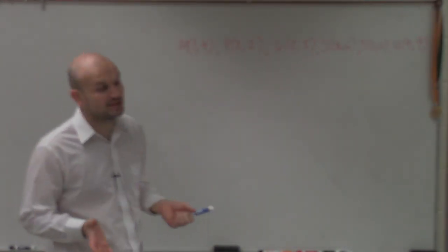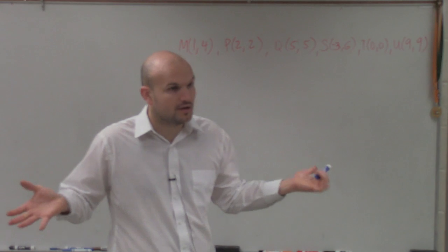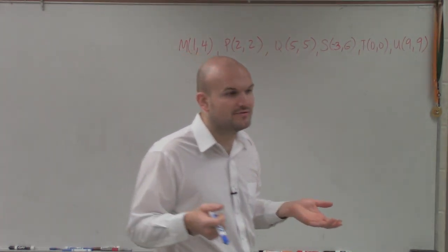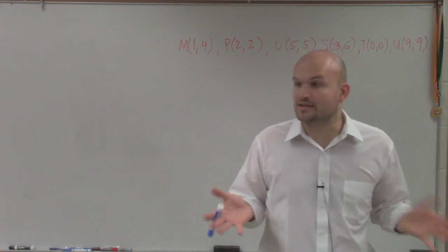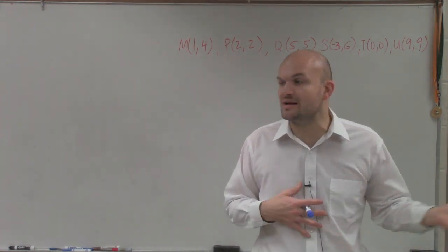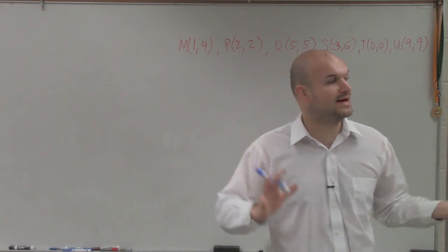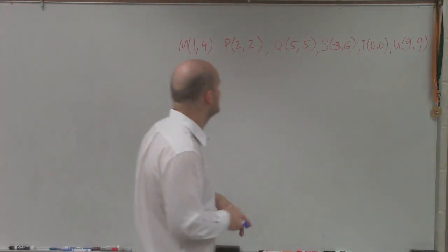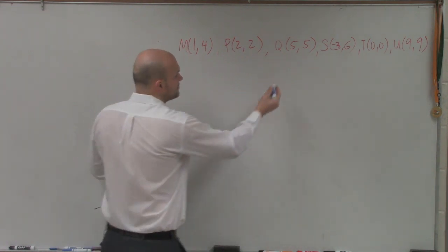What they're asking us to do is plot the figure, our original figure, and then apply the transformation. Then determine, are these similar or not? Now remember, when we were trying to determine if things were congruent, we had to find the distances. We plotted them and applied the distance formula to make sure diagonals were equal or opposite sides were equal. So in this case, first thing we've got to do is plot them.